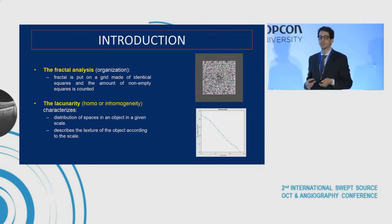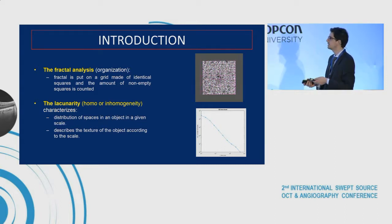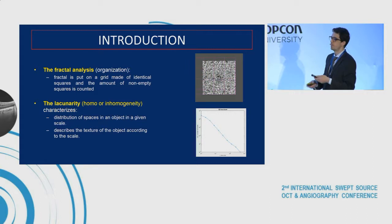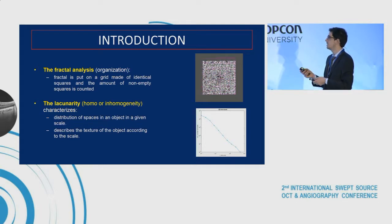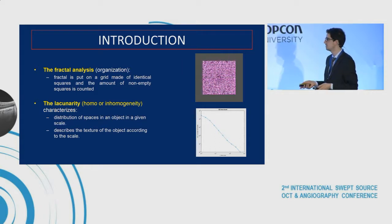These box counting methods enable us to get two new parameters for our OCT angiography images. The first one, the fractal analysis, is a measure of the non-empty squares present in the image per square size, and it is a measure of the organization of our image pattern. The lacunarity is the complement of the fractal analysis and gives us an idea of the homogeneity or heterogeneity of the system — the more heterogeneous, the higher the fractal dimension, as Dr. Koskas discussed this morning.